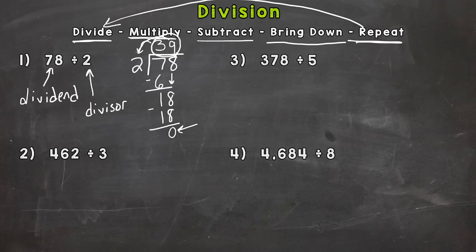So let's take a look at number 2 here. We have 462, that's our dividend, divided by the divisor, which is 3. So the first step is divide. We need to do 4 divided by 3. How many groups of 3 can we pull out of 4? 1. Then we multiply.